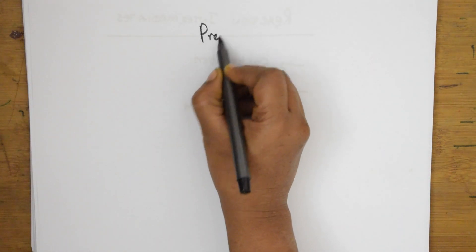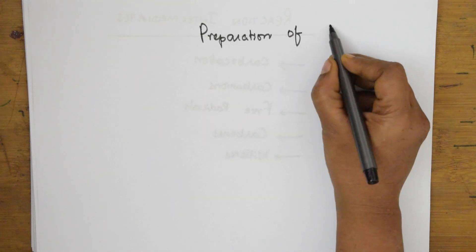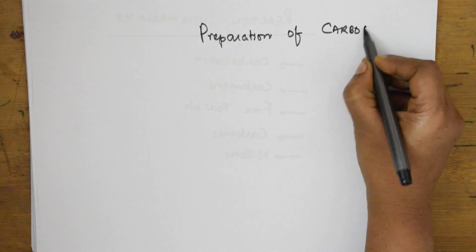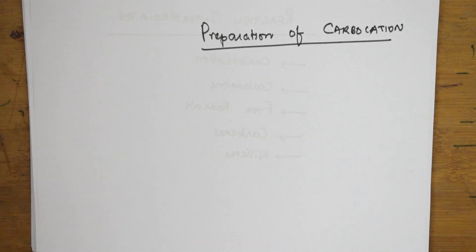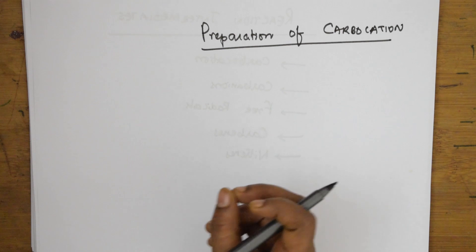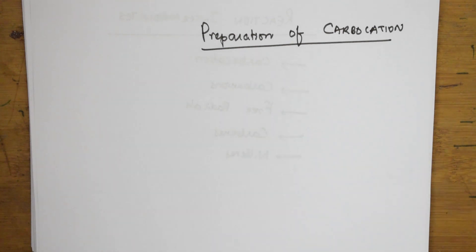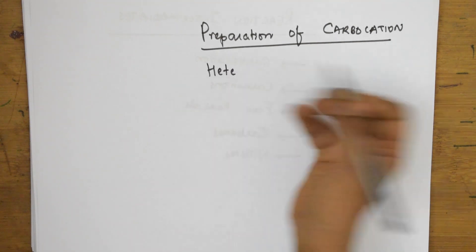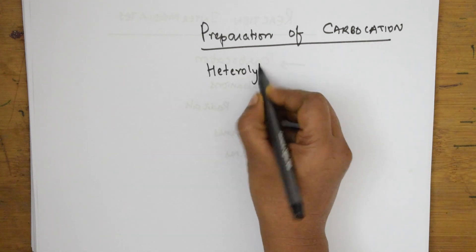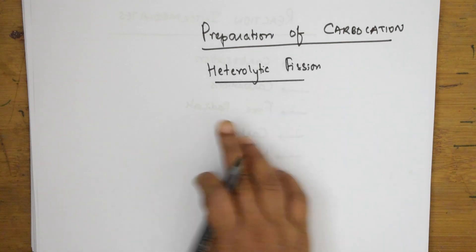Let us start with the preparations of these reaction intermediates. First, preparation of carbocation — how are these formed and during which reaction. Basically, when I take the preparation of carbocation, the first important reaction where I can show the formation of carbocation is heterolytic fission. We basically have two types of fission — fission means breakage.